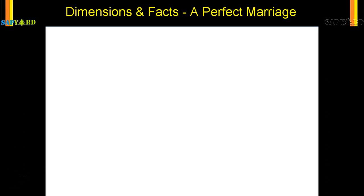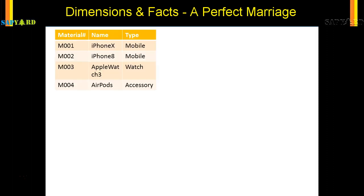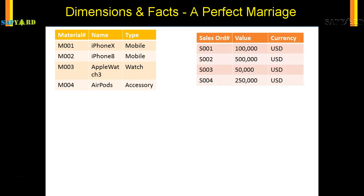Let us look into an example of dimension and fact tables. Say your company sells some material like phones, watches, and cards. These are the dimensions because these are master data — they do not change.